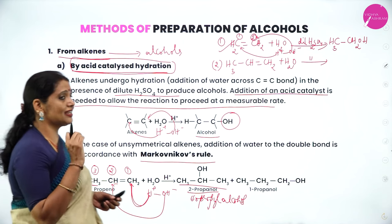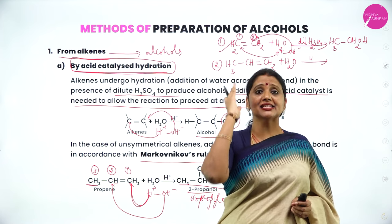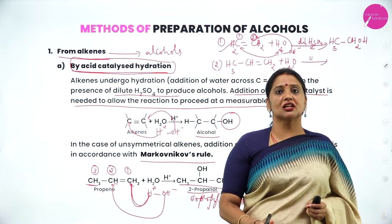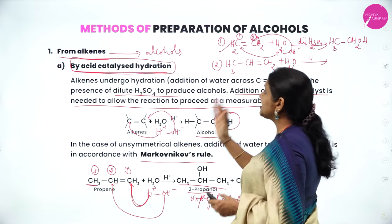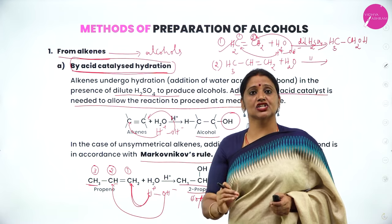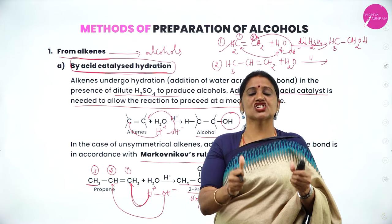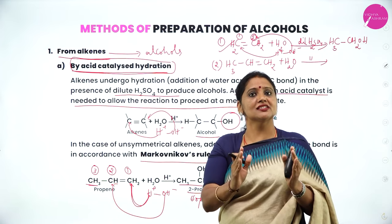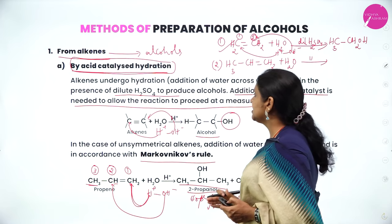In alkenes we have two types: symmetrical alkene and unsymmetrical alkene. In case of symmetrical alkene, no rule is needed. But in case of unsymmetrical alkene, we apply Markovnikov's rule. This is how we convert alkenes into alcohol by acid catalyzed hydration — addition of water in the presence of dilute sulfuric acid as catalyst.